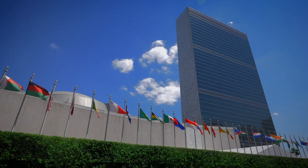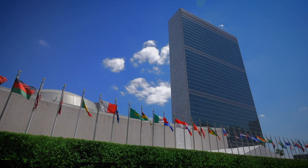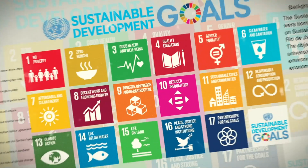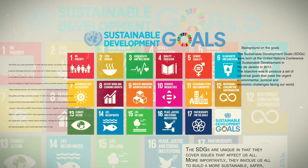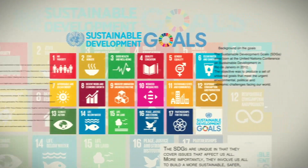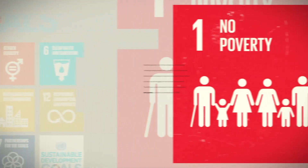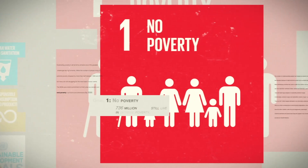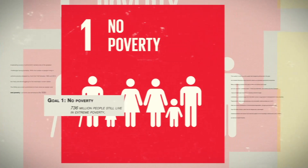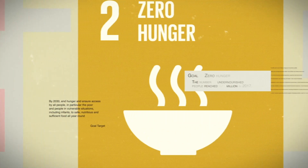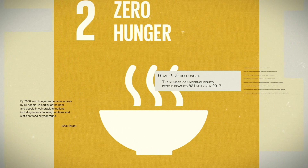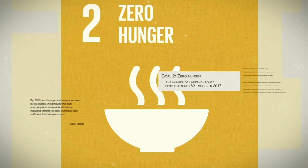In 2015, the United Nations announced the 17 Sustainable Development Goals, a framework of objectives to build a better, more viable and sustainable world for everyone.